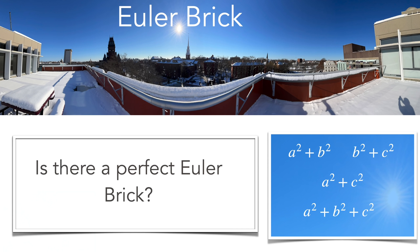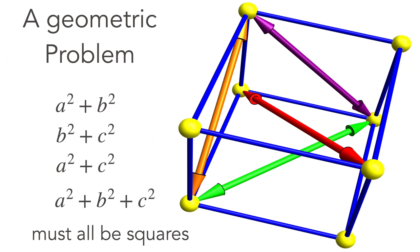Finally, the problem of perfect Euler bricks. Are there integers a, b, c such as a square plus b square, b square plus c square, a square plus c square, and a square plus b square plus c square are all squares? This is a geometric problem and asks whether there is a brick, a cuboid, such that sides and the side diagonals and also the space diagonals are all integers.